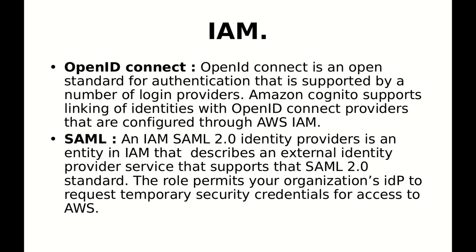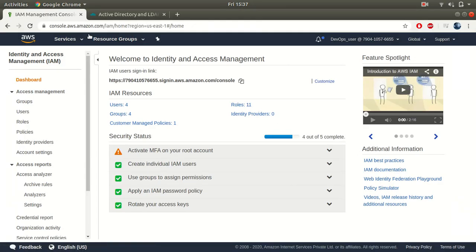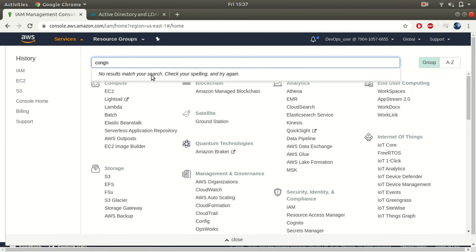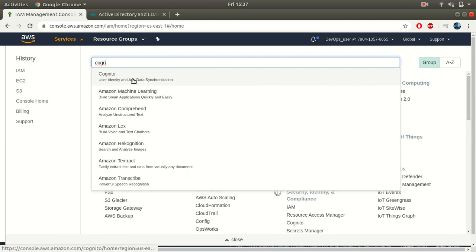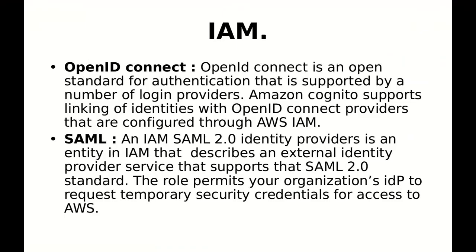OpenID Connect is an open standard for authentication supported by a number of login providers. Amazon Cognito supports linking of identities with OpenID Connect providers configured through AWS IAM. In AWS we have a service known as Cognito, which can be used for OpenID Connect. For SAML, an IAM SAML 2.0 identity provider is an entity in IAM that describes an external identity provider service supporting the SAML 2.0 standard. The role permits your organization's IDP to request temporary security credentials for access to AWS.